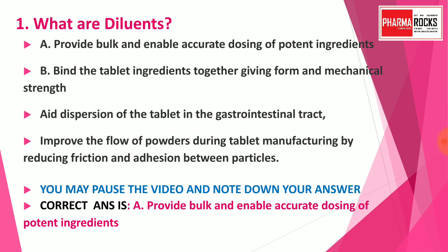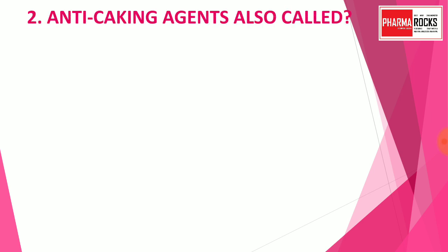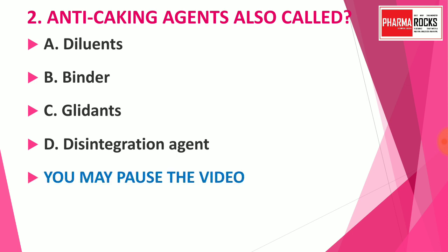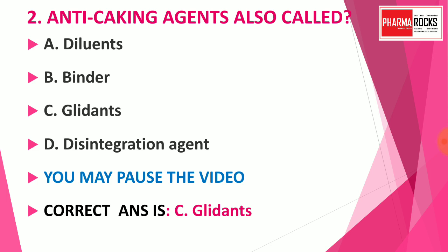Question number two: Anti-caking agent is also called — Option A: diluents, Option B: binder, Option C: glidants, Option D: disintegration agent. You may pause the video to note down the correct answer. The correct answer for this question is Option C: glidants. Glidants are also called anti-caking agents.